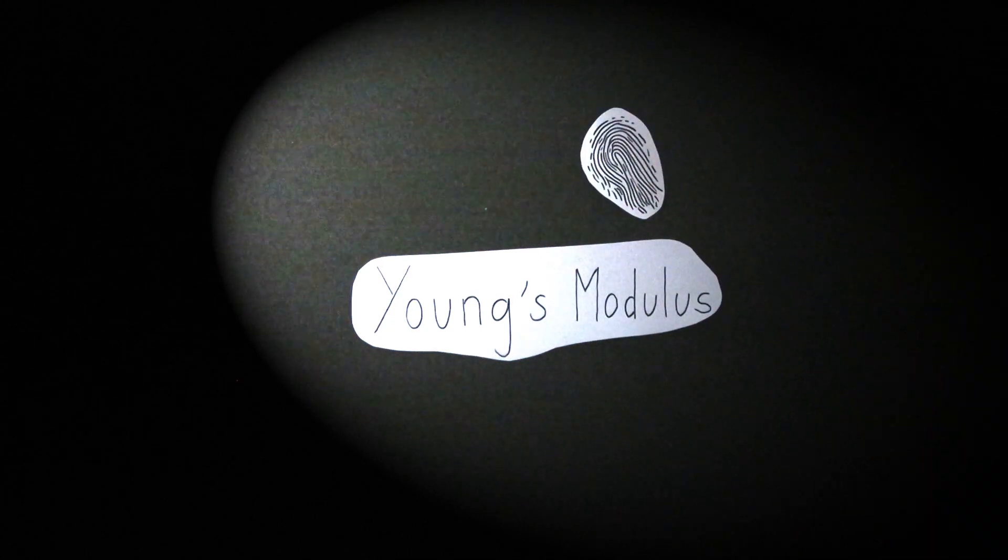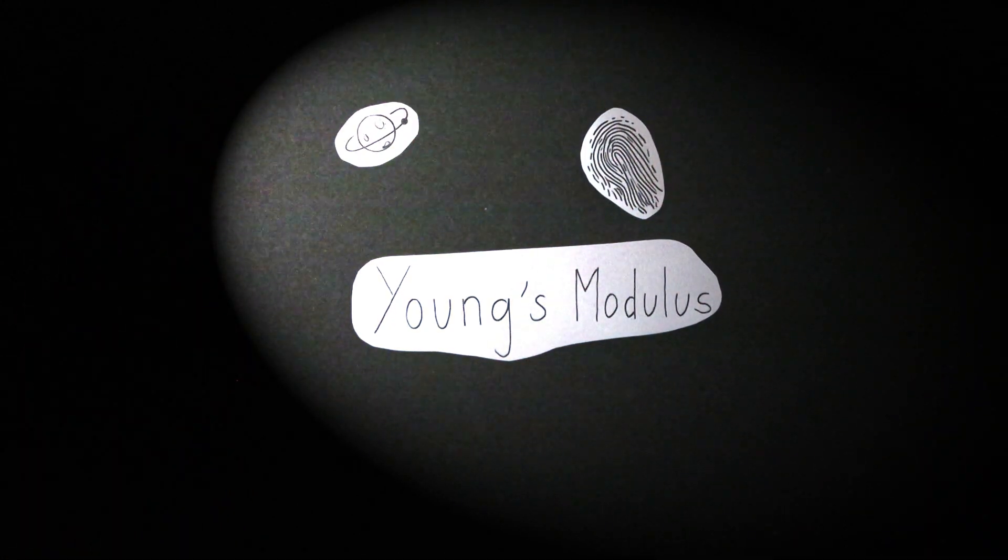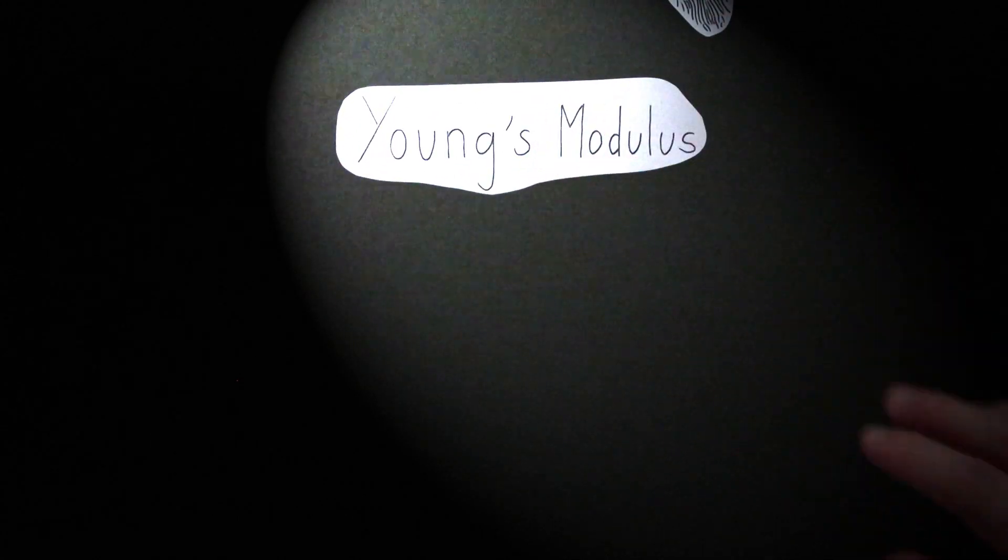First of all we need to look at the very important property of materials, the Young's modulus. It's the fingerprint of every material in the universe. If a material hasn't got any Young's modulus, it's simply not a material. So what is it? It's a ratio, a ratio between stress and strain.